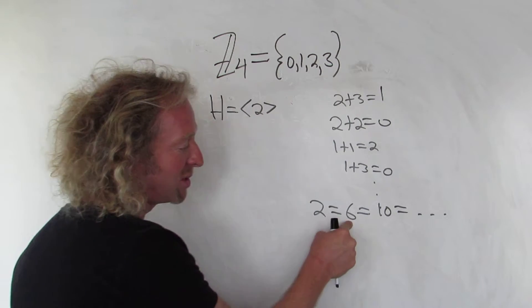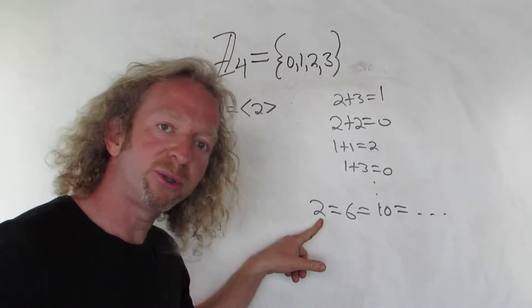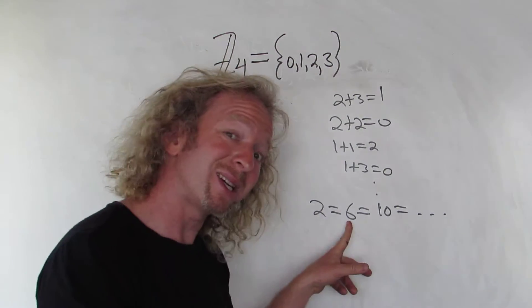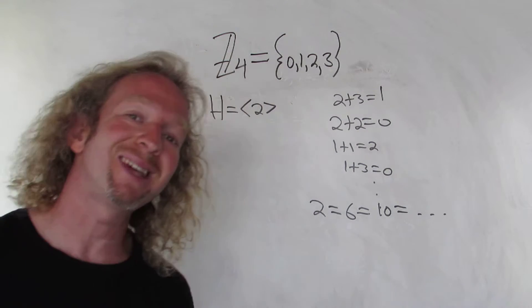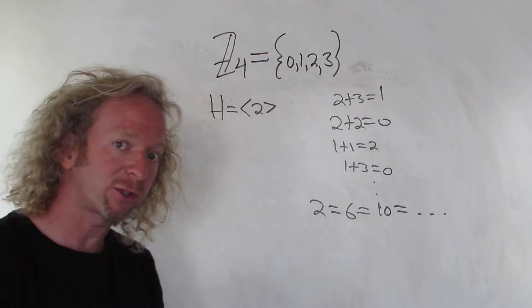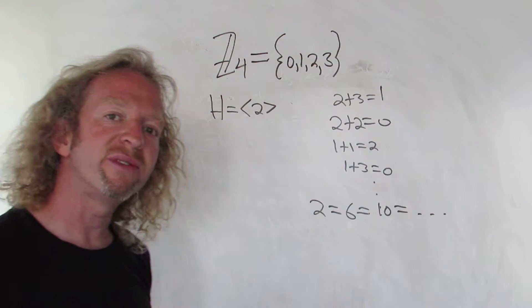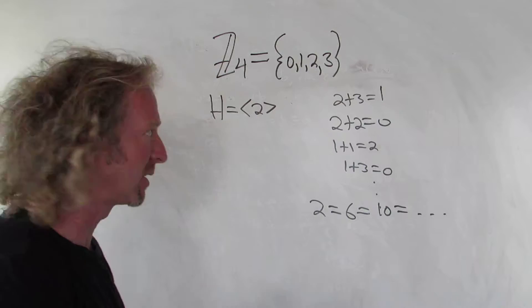Anyways, 2 is the same as 6, because 4 goes into 2 zero times and the remainder is 2. 4 goes into 6 one time and the remainder is 2. 4 goes into 10 two times, 4 times 2 is 8, and the remainder is 2 and so on. So these are the remainders that you get when you divide a number by 4, that's what these are.